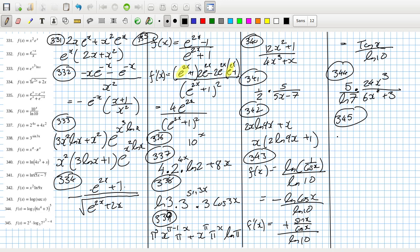345. I want to bring the power down, so that would be 2 power x times x squared minus 4 times log 2, times 2x times x squared minus 4, plus 2x times 2 power x.